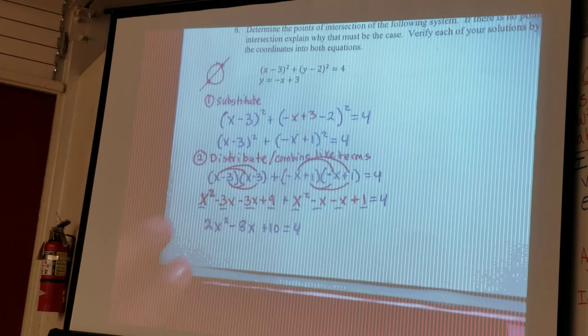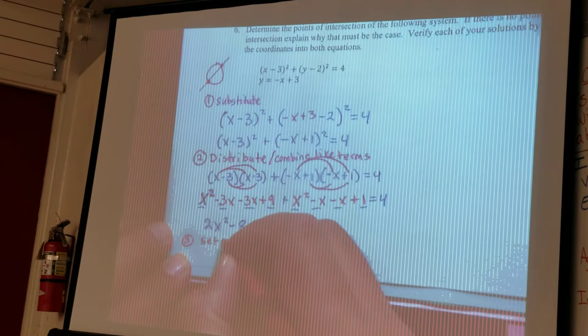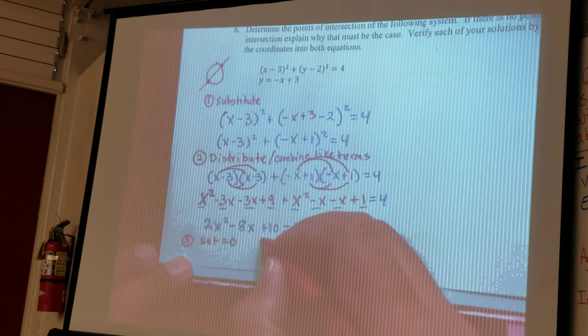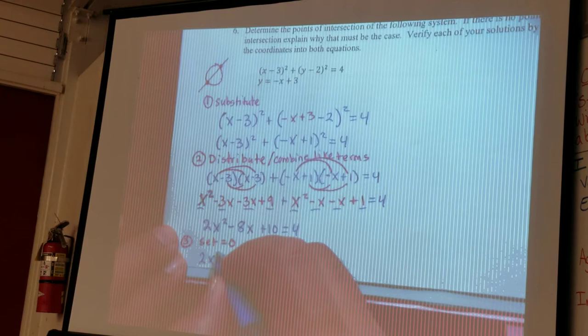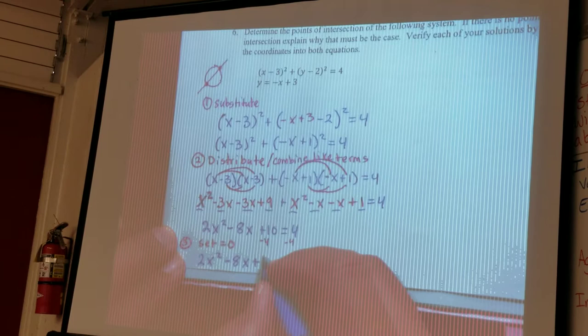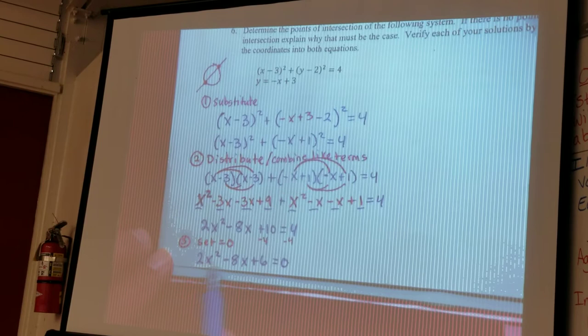Alright, so we've simplified, combined all the like terms we can, we will then go to step 3, which is to set equal to 0. So in order to do that, we will minus 4 to both sides, and then that gives us, so 2x squared stays the same, minus 8x stays the same, so then we minus 4, so this becomes plus 6, equals 0.